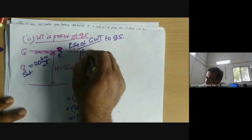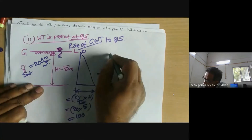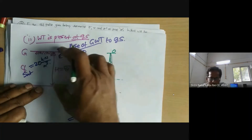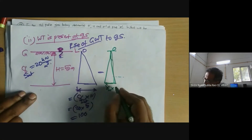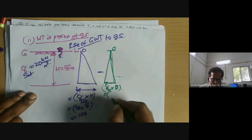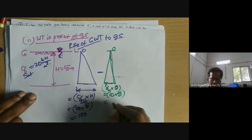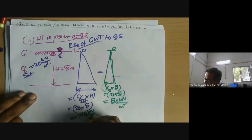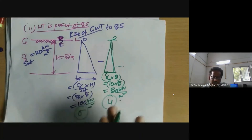Now pore water pressure also exists because the groundwater table is there. Pore water pressure is zero at the top and keeps increasing. The full head of water equals the thickness of the layer. Taking gamma_w = 10 kN/m³ for simplification, pore water pressure u = 10 × 5 = 50 kN/m². Total stress is 100 kN/m² and pore water pressure is 50 kN/m². Now we need to calculate effective stress.